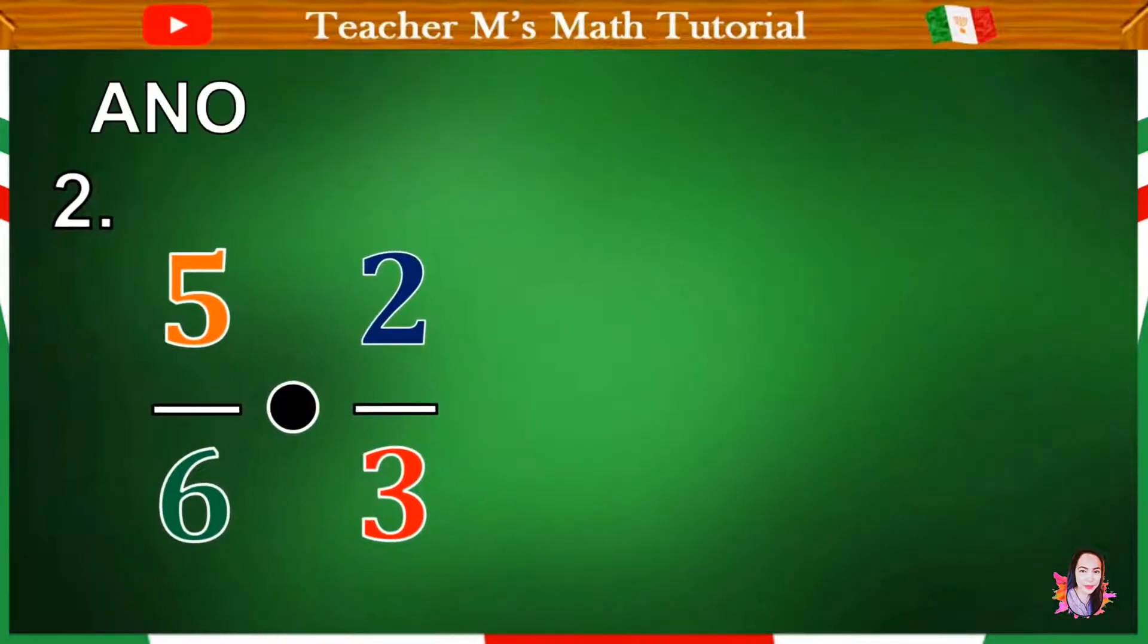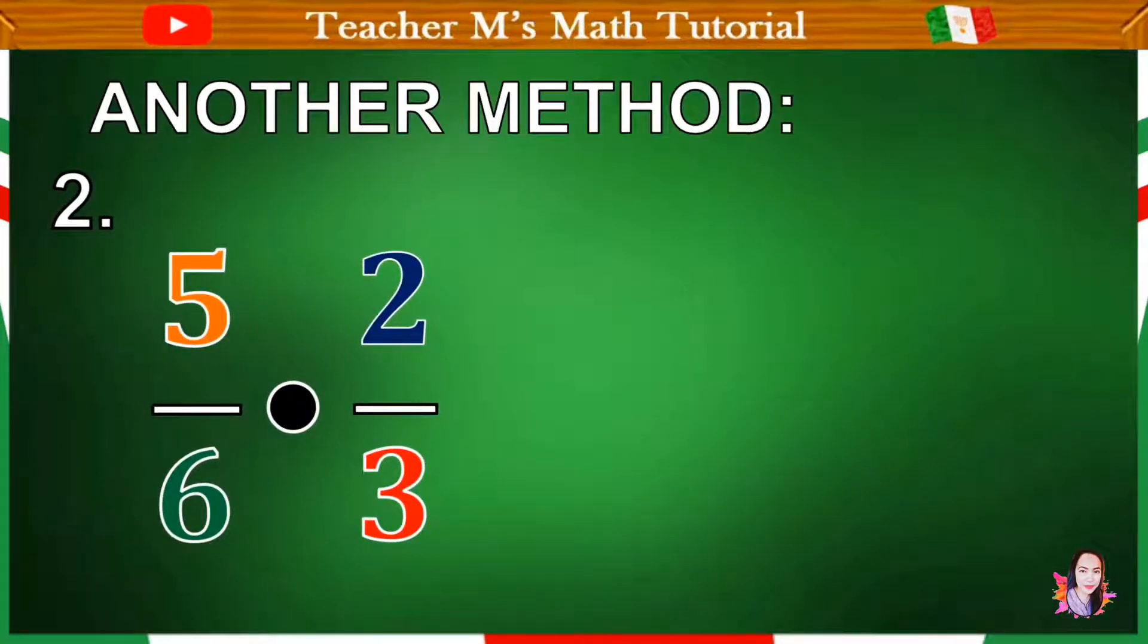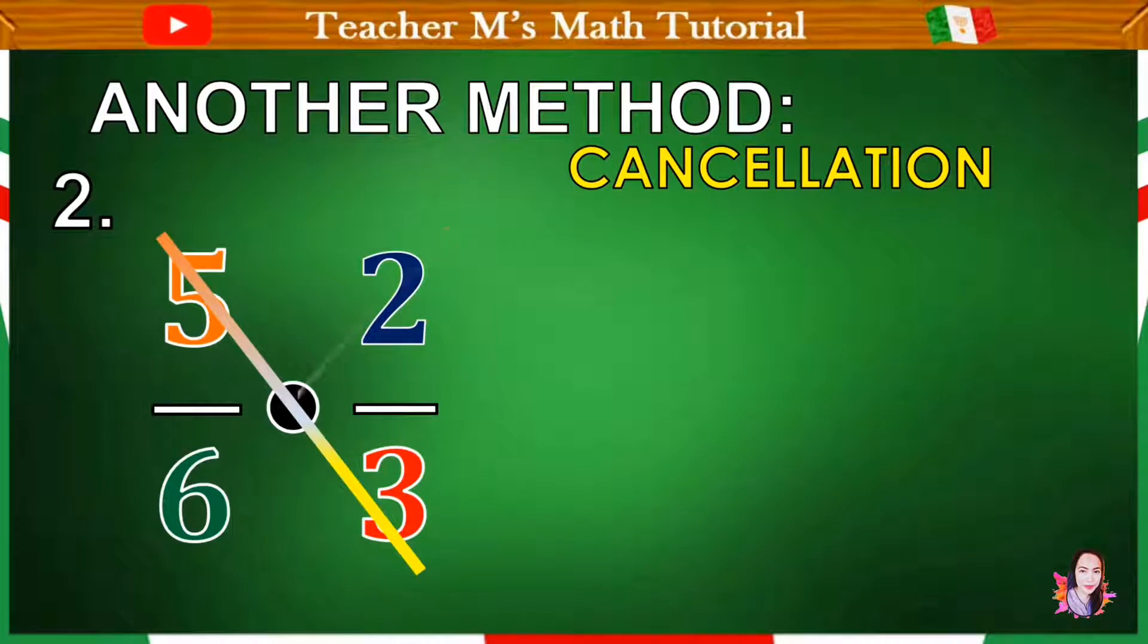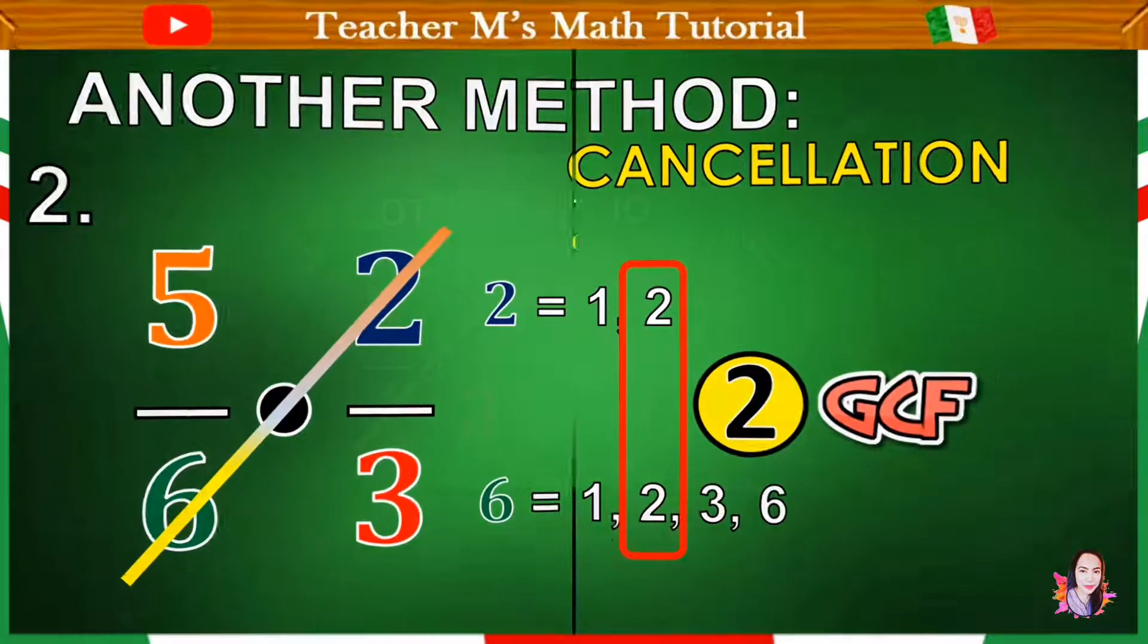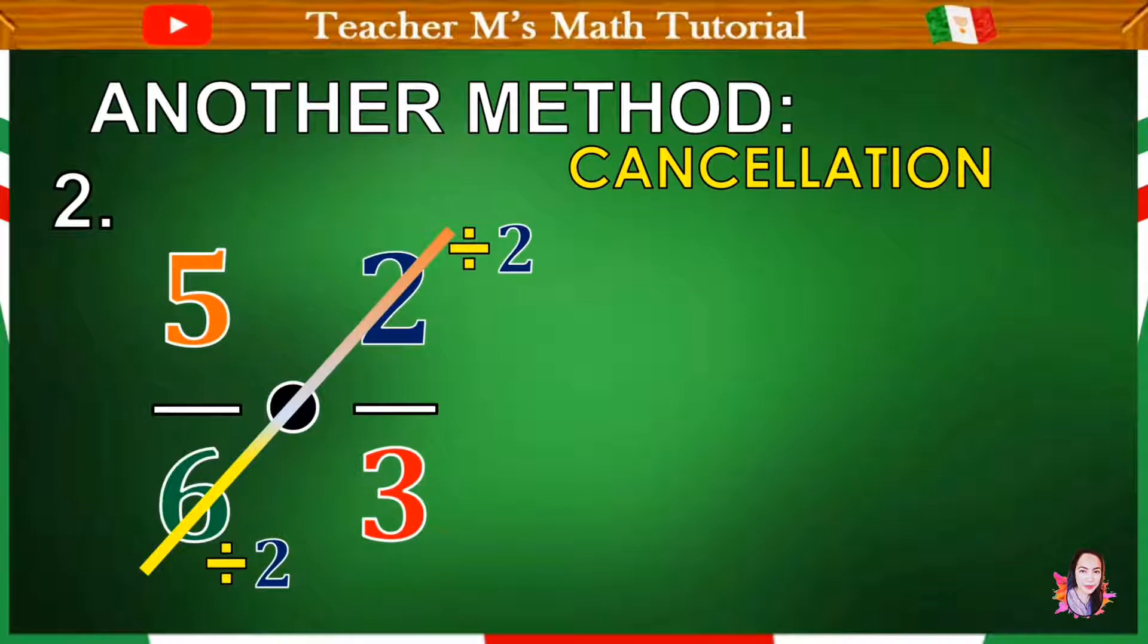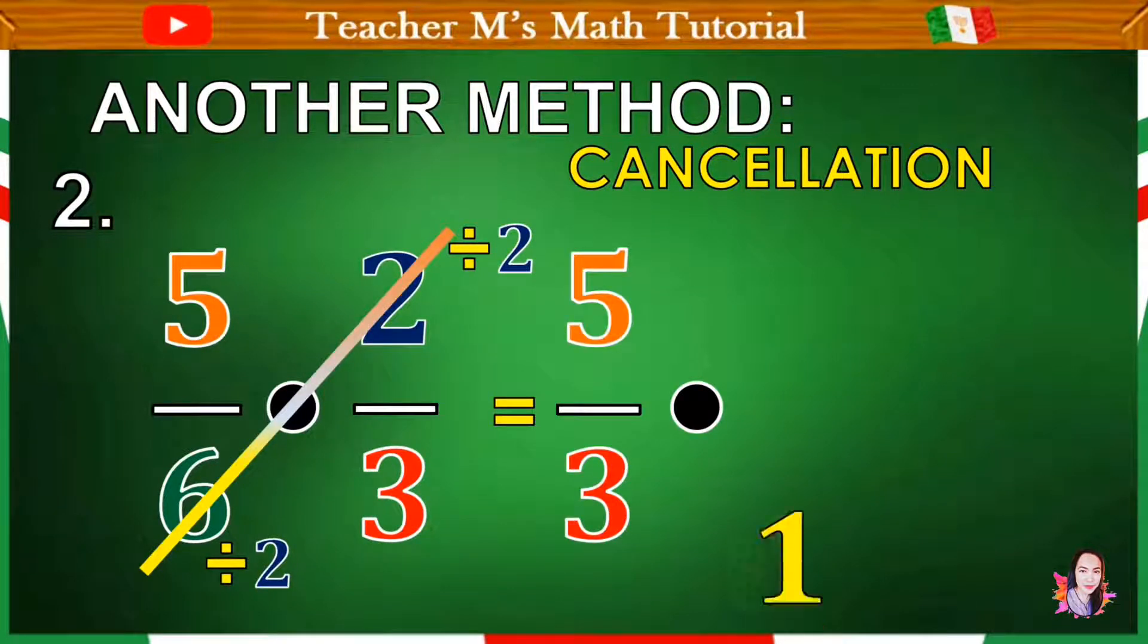There is another method to get the product of these fractions. And we call it the cancellation method. So when we say cancellation, we need to reduce the numbers by getting their greatest common factor. We have 5 and 3. Walang common factor other than 1. Hindi natin yan pwedeng i-reduce. But when it comes to 2 and 6, I think yes, these numbers can be reduced by dividing by GCF. So the GCF will be 2. So divide 2 by 2 and 6 by 2. So we already have these fractions.